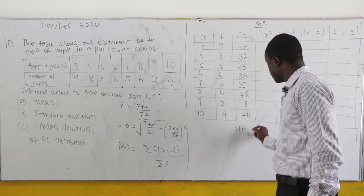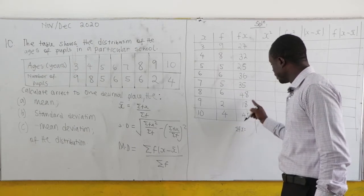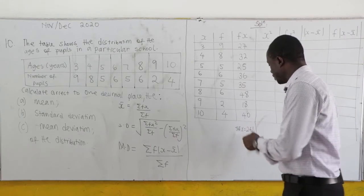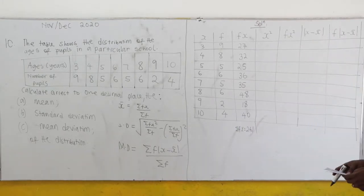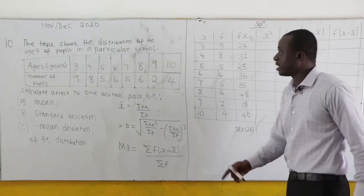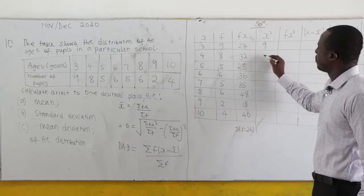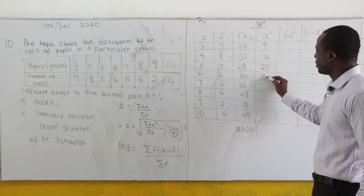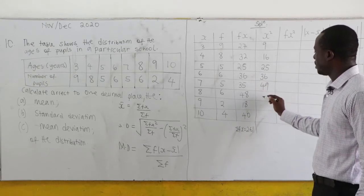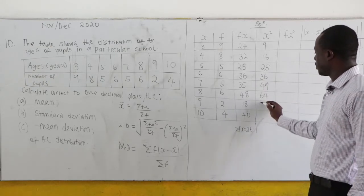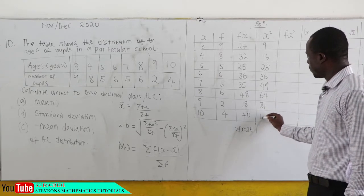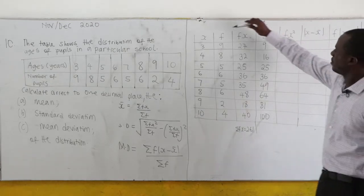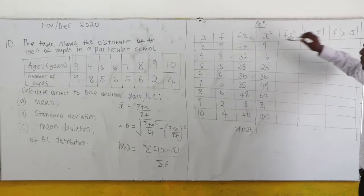Adding all the fx values gives us Σfx = 261. Now for x²: 3² = 9, 4² = 16, 5² = 25, 6² = 36, 7² = 49, 8² = 64, 9² = 81, 10² = 100.